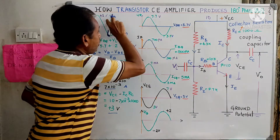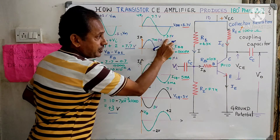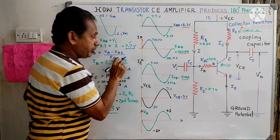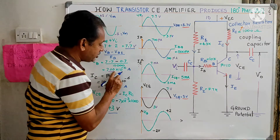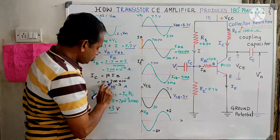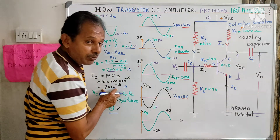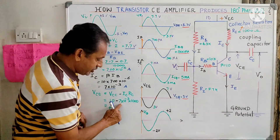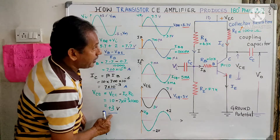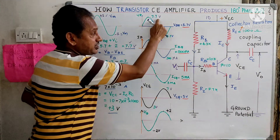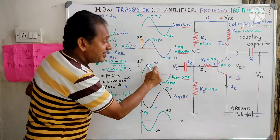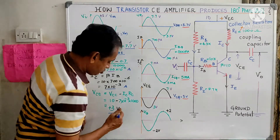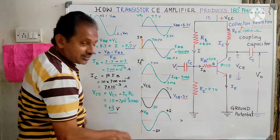When an input sinusoid of ±2V is superimposed on the 5.7V bias, the base voltage swings between 7.7V and 3.7V. For the positive half cycle at 7.7V: IB = 700 microamps, IC = beta × IB = 10 × 700μA = 7 milliamps, and VCE = Vcc − IC × RC = 10 − 7 = 3 volts. So 5V shifts down to 3V.